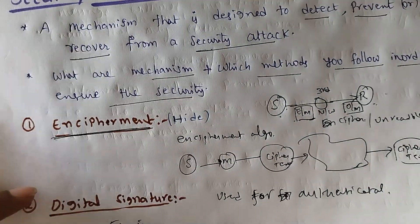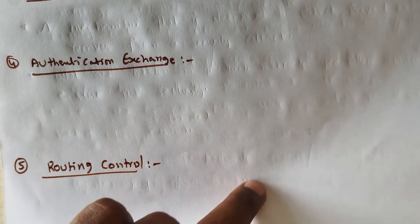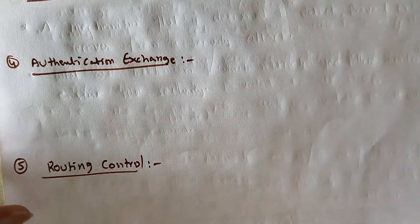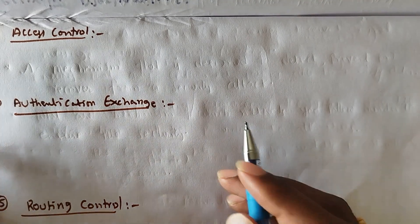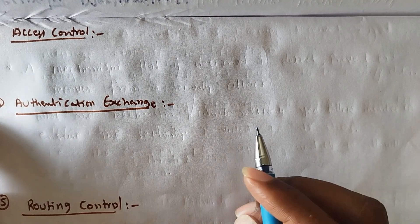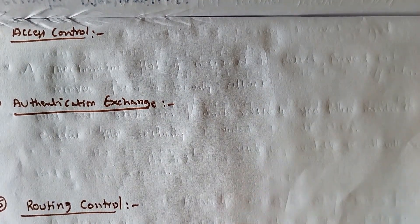So the first mechanism is encipherment, the second is digital signature. The next one is access control. What is the meaning of access control? In any organization or any place where several people are working, the permissions will be restricted. The entire system permissions will be restricted for everyone according to their designation — the permissions will be changed accordingly.